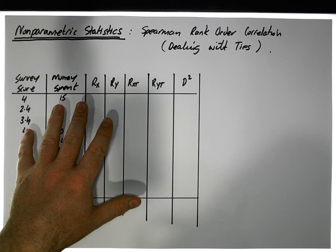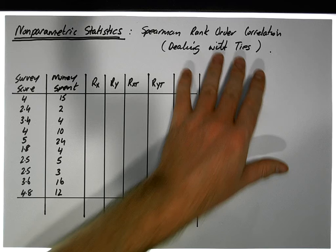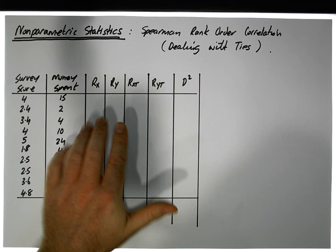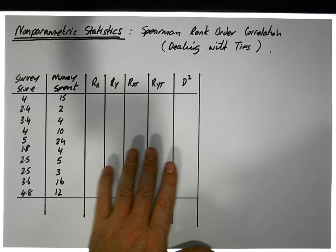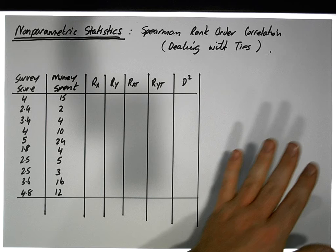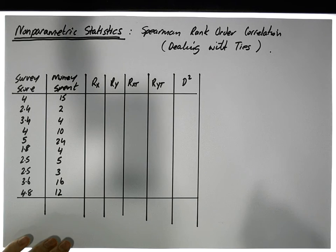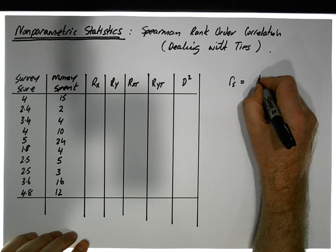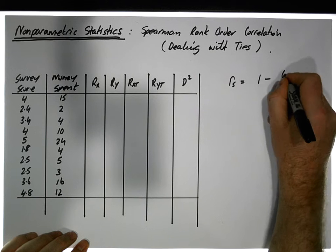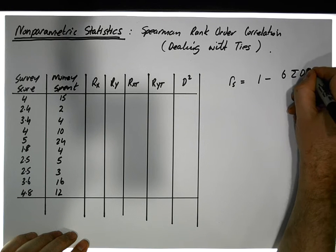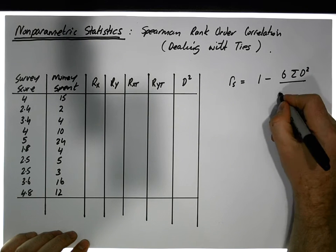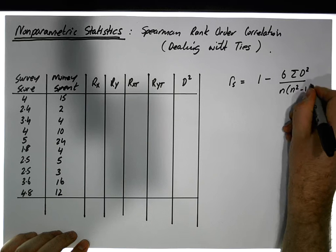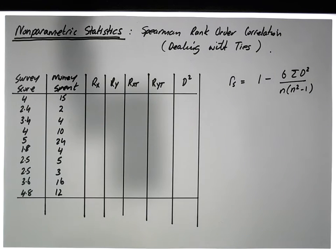What I want to do in this video is the more advanced approach, where we deal with ties — and more specifically, not just ties in the rankings but also ties in relation to the formulas used. The formula from the last video was: r_s equals one minus six times the sum of the squared differences in ranks, all over n times (n squared minus one), where n is the sample size.